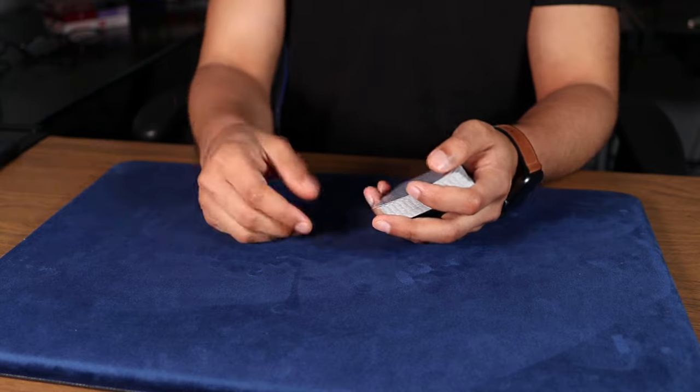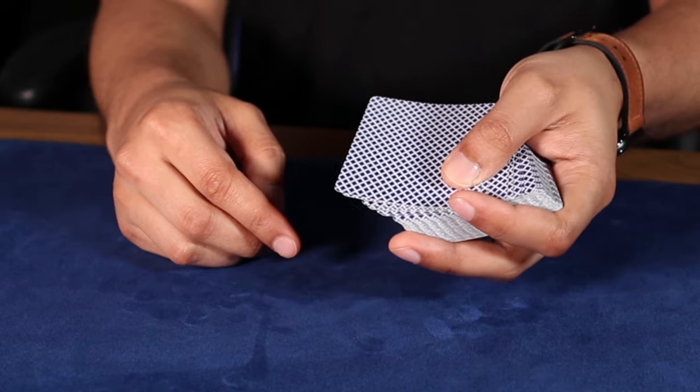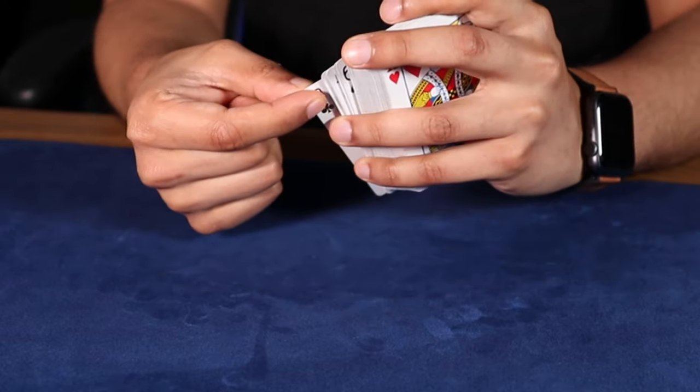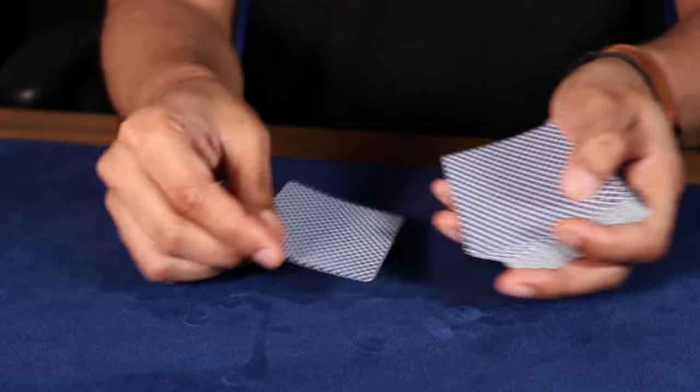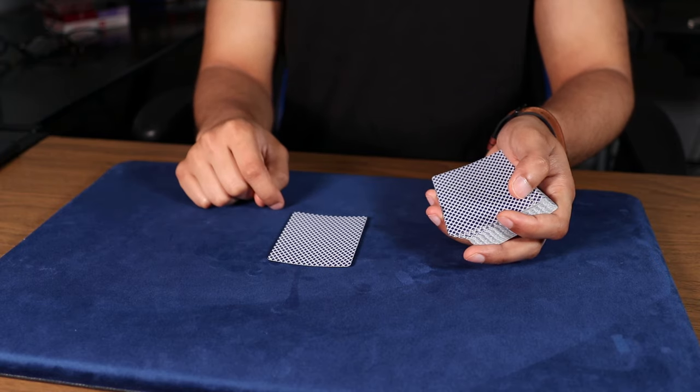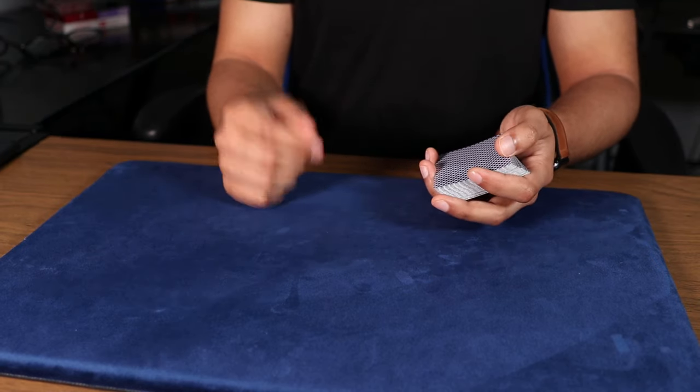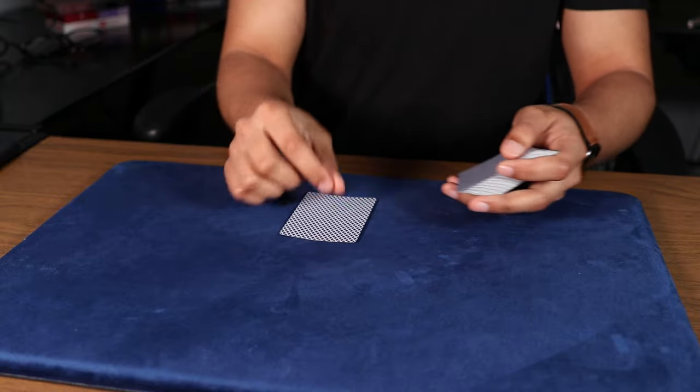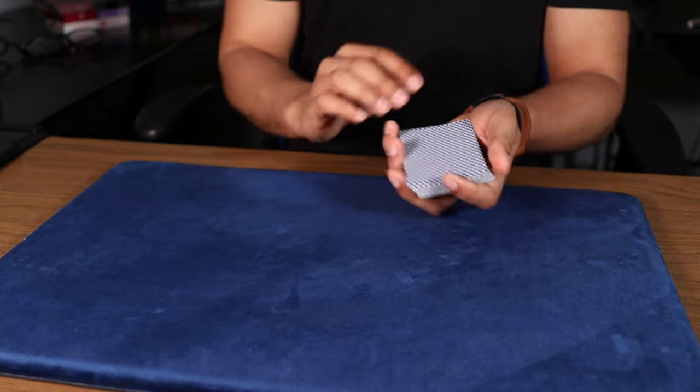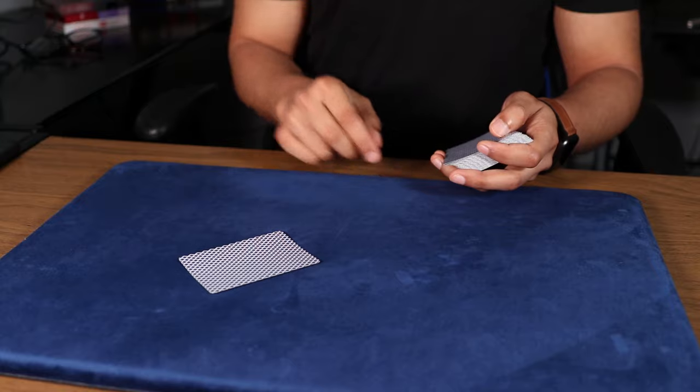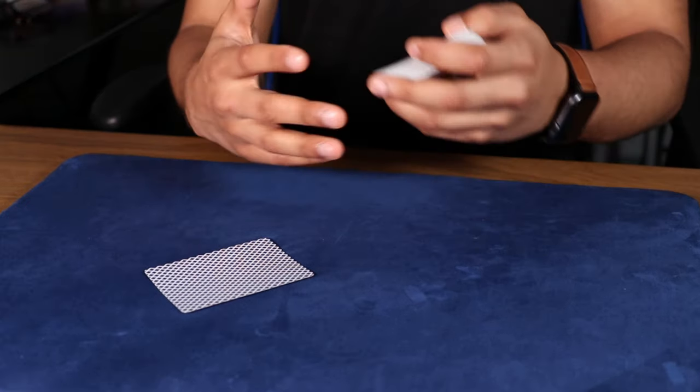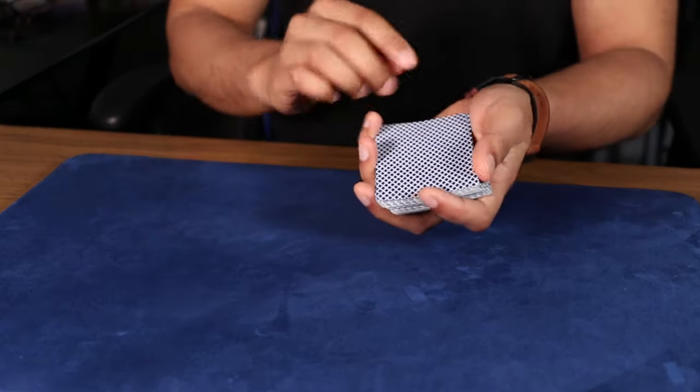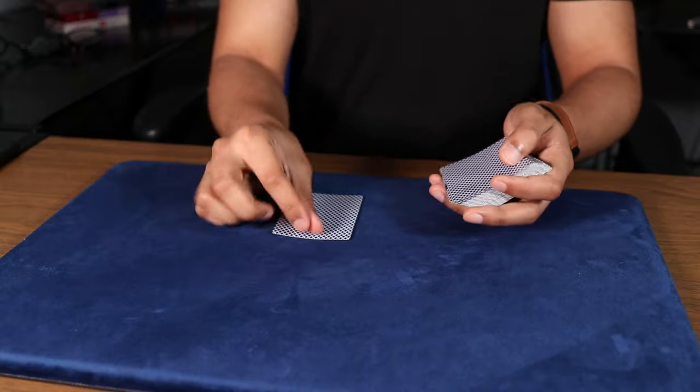Now, the second deal that I like to do is the push-off second deal. This is where you push off two cards at once, take that second card while pulling back the top card dealing that second. Now, there are actually two ways I like to do the push-off double. The first way is dealing directly onto the table, and the second way is throwing the card onto the table. They both involve a very similar method, so I'm going to be teaching it on how to do it this way.